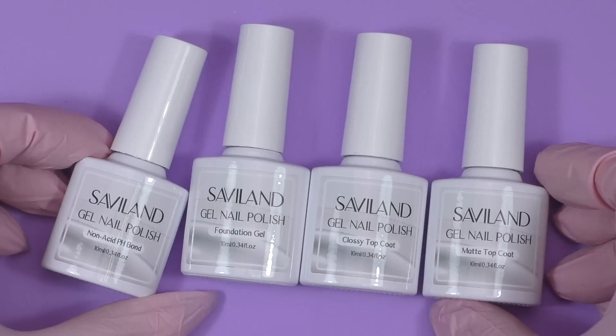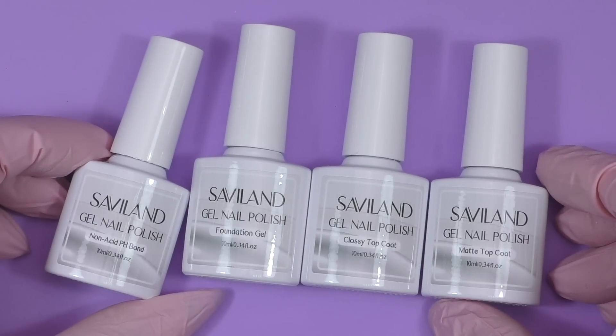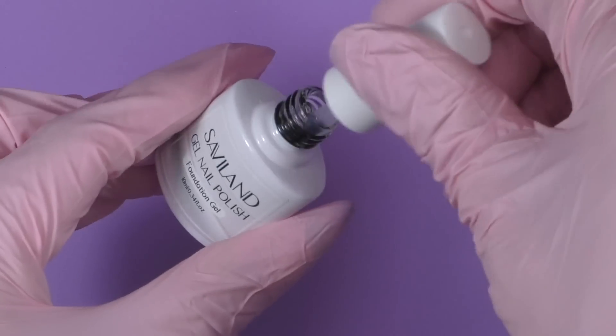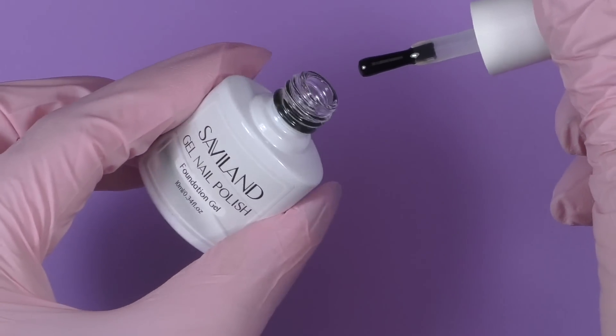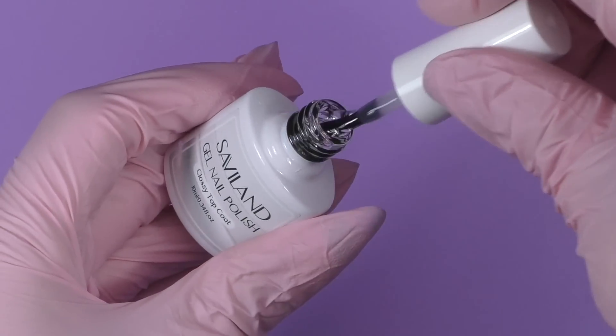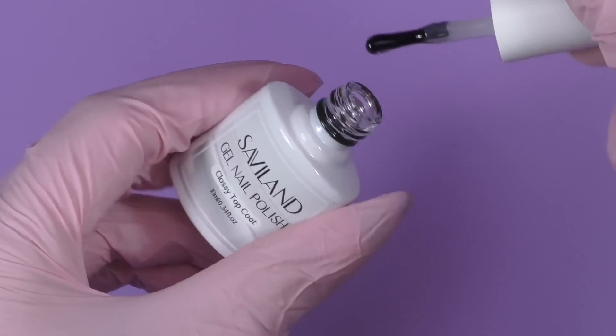It also includes non-acid pH bond, base coat, glossy top coat, and matte top coat. It's really nice that they included them all in the kit because you always need these essentials. The base coat has thin consistency and glossy top coat is medium thick.